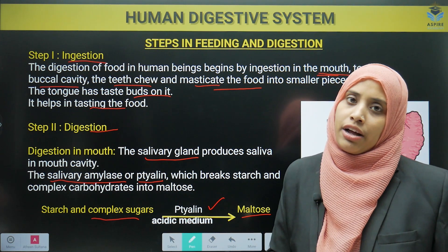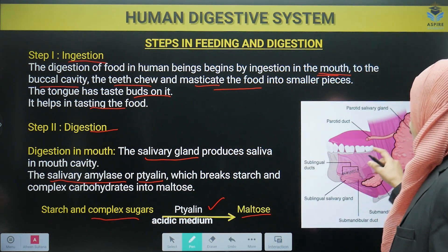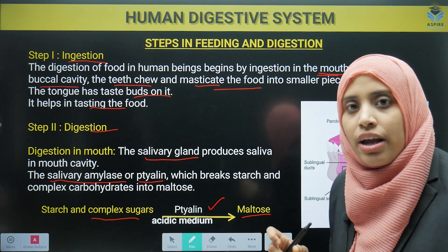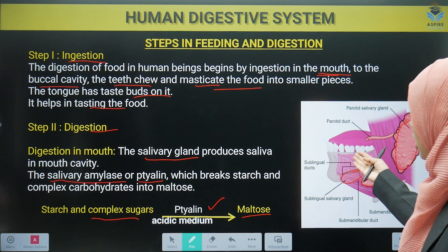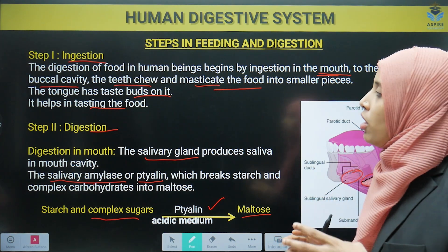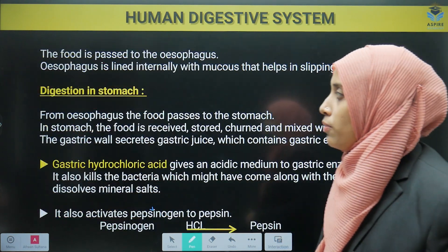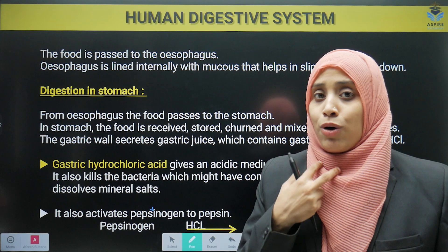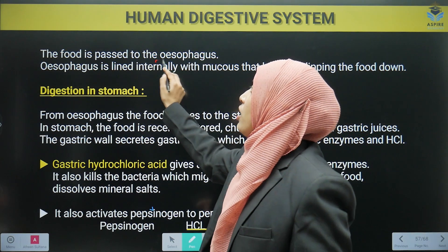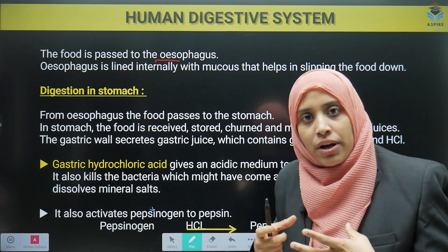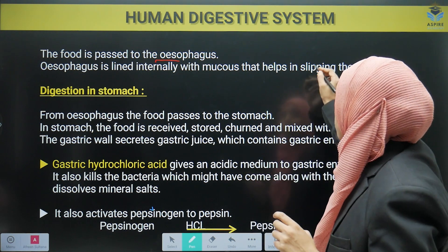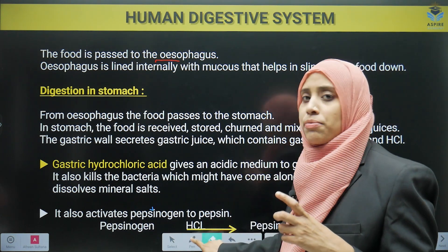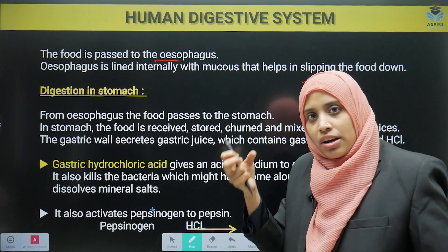Salivary amylase breaks our carbohydrate product — starch — into maltose. There are three pairs of salivary glands which produce salivary amylase. Your teeth and tongue together help in mixing of the food. After digestion in the mouth, the food travels through the esophagus — your food pipe — which has an inner lining of mucus. Mucus is a sticky substance that helps the food slip down easily to the stomach.